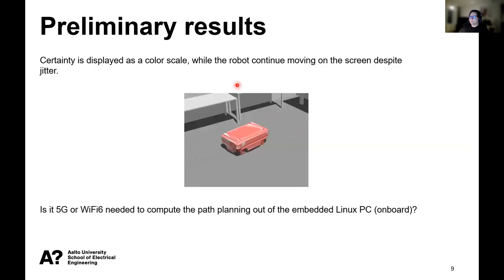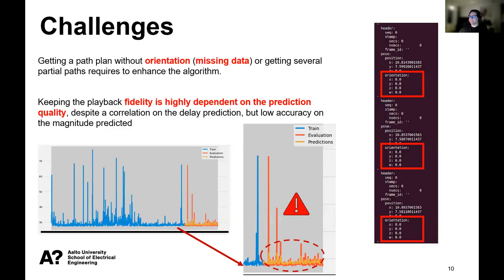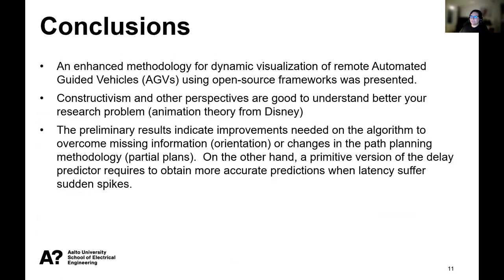The idea is to make a playback of the path plan and change the color of the robot depending on the variation of the information, the certainty of the position. We have challenges of incomplete information. Sometimes the robot doesn't send us all the orientation, and sometimes our predictor doesn't get correlation, the magnitude is not completely correct.